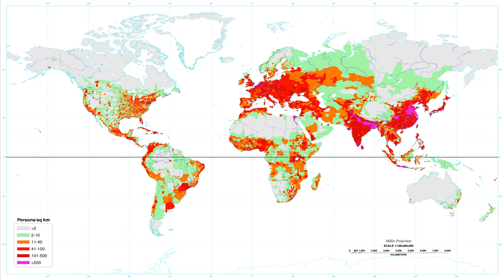For humans, population density is the number of people per unit of area, usually quoted per square kilometer or square mile, which may include or exclude areas of water or glaciers. Commonly this may be calculated for a county, city, country, another territory, or the entire world. The world's population is around 7,500,000,000 and Earth's total area including land and water is 510,000,000 square kilometers.